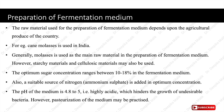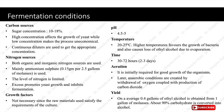The fermentation conditions required for ethanol production are as follows. The carbon source should contain sugar concentration in the range of 10 to 18 percent; high concentration affects yeast growth while low concentration makes the process uneconomical. Both organic and inorganic nitrogen sources are used — mainly ammonium sulfate at 0.15 grams per 2.5 gallons of molasses. Excess nitrogen promotes yeast growth and inhibits fermentation. pH is maintained in the range of 4.5 to 5. Temperature of 20 to 25 degrees Celsius is optimum; higher temperature favors bacterial growth and causes loss of ethyl alcohol by evaporation.